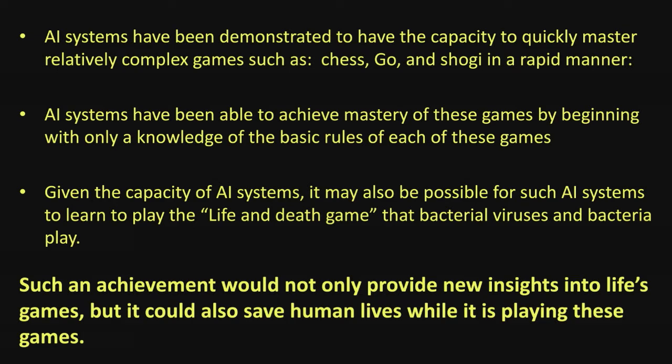AI systems have already done incredible things — they've mastered complicated games like chess, Go, and Shogi that humans spend a lifetime learning, just by knowing the basic rules and playing against themselves. If they can do that, why can't they do this with phage and bacteria? The problem is not really the computer, though they're getting better and better. The real problem is humans taking the time to sequence all the genomes of both phage and bacteria and developing learning pairs — ones that work and ones that don't. Until we have that collection, you can't teach a computer.